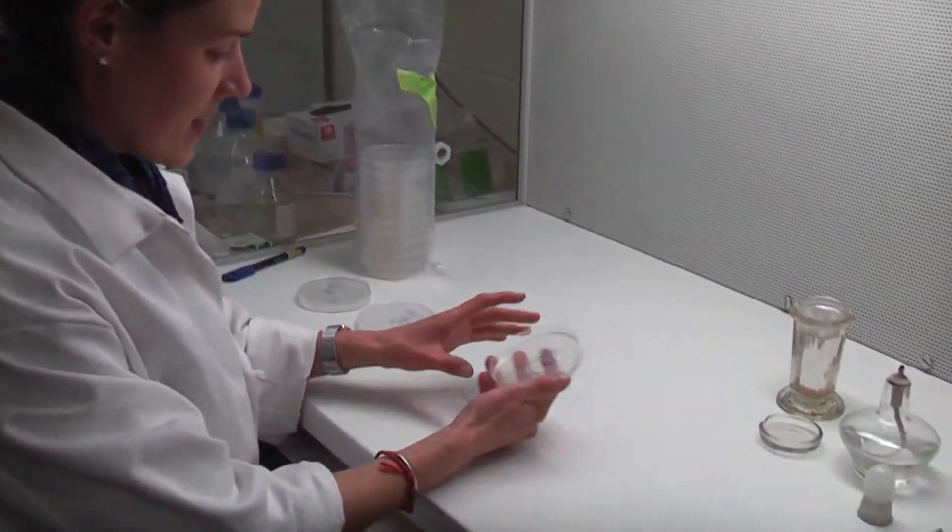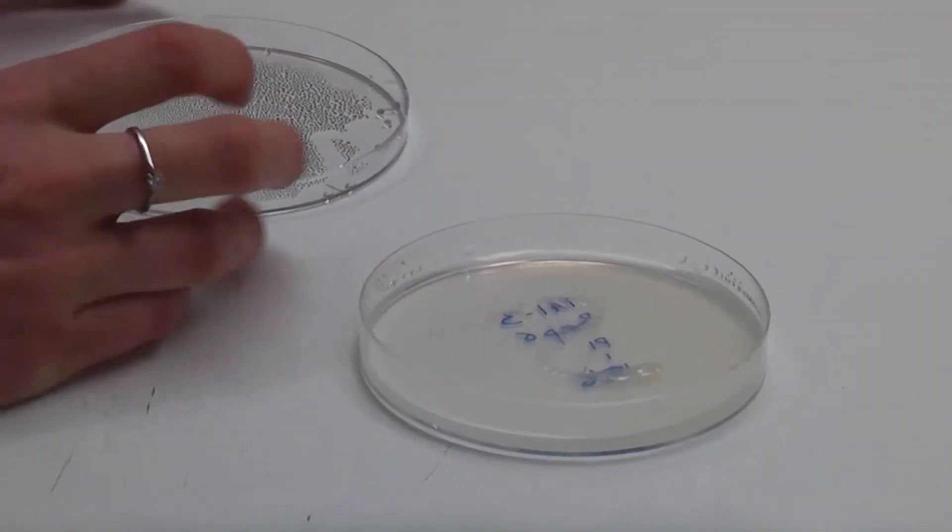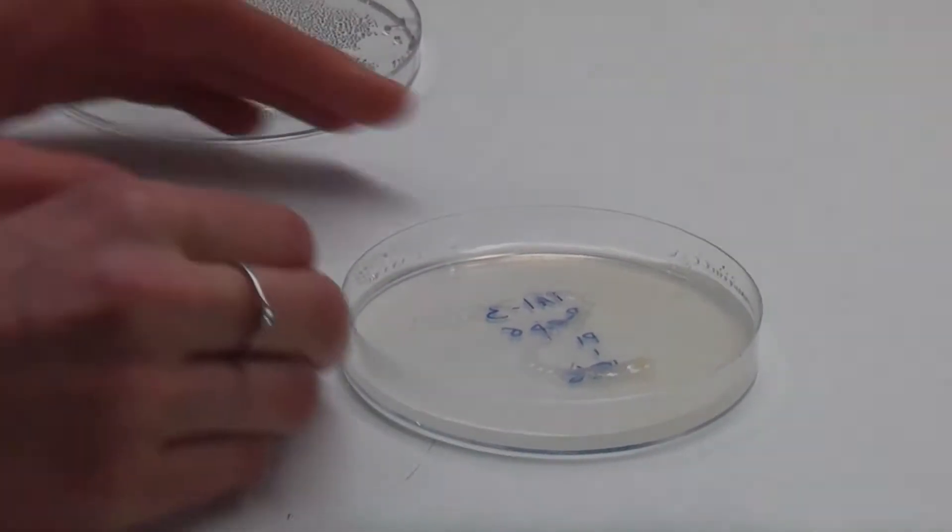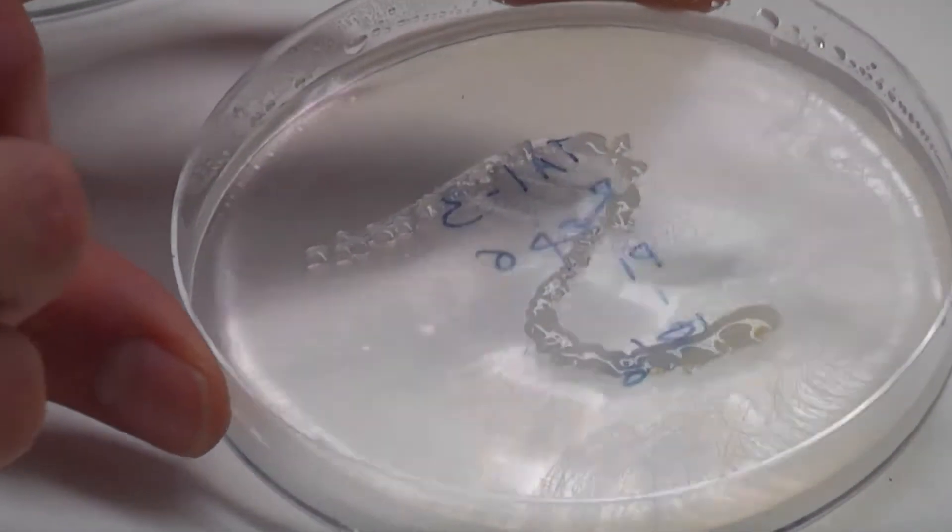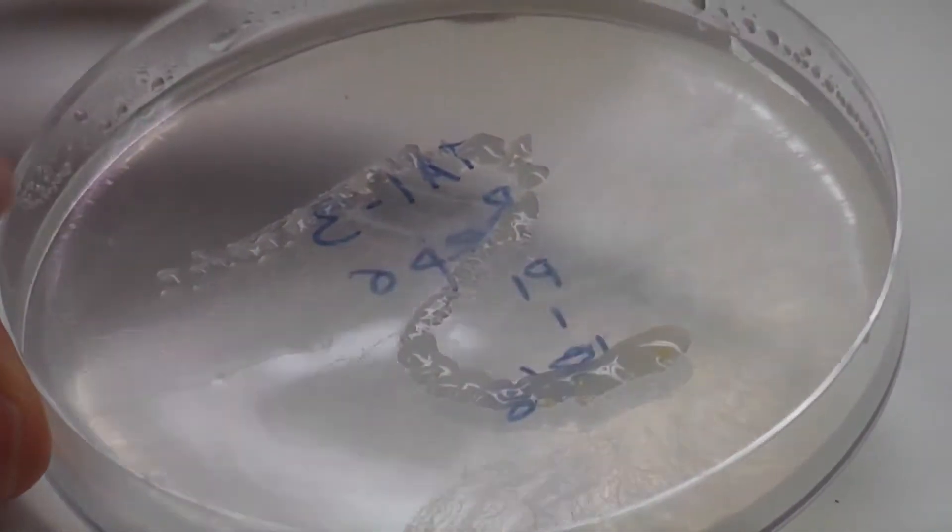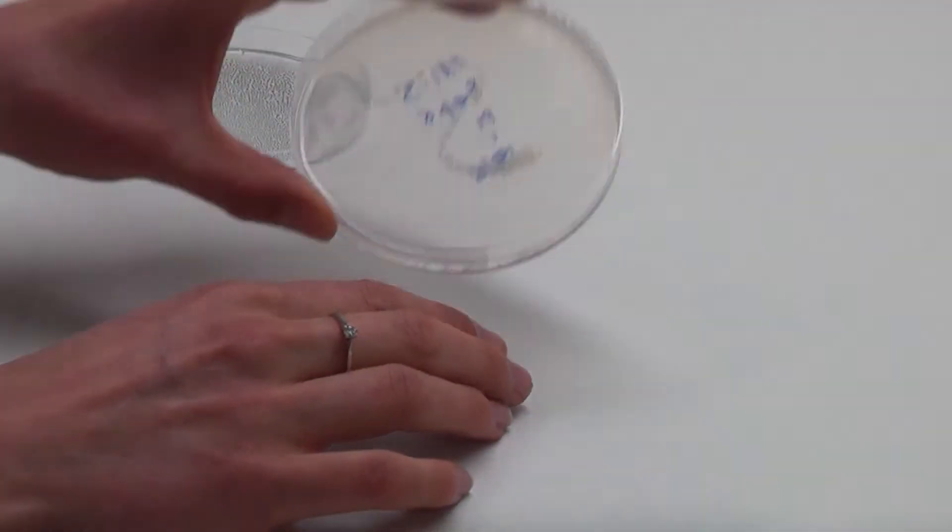So I have a plate here and as you can see it's got some other, it's not pure rhizobia. We're looking for the white gooey stuff rather than this. There's some psalis here and some yellowy things in there that we don't want.